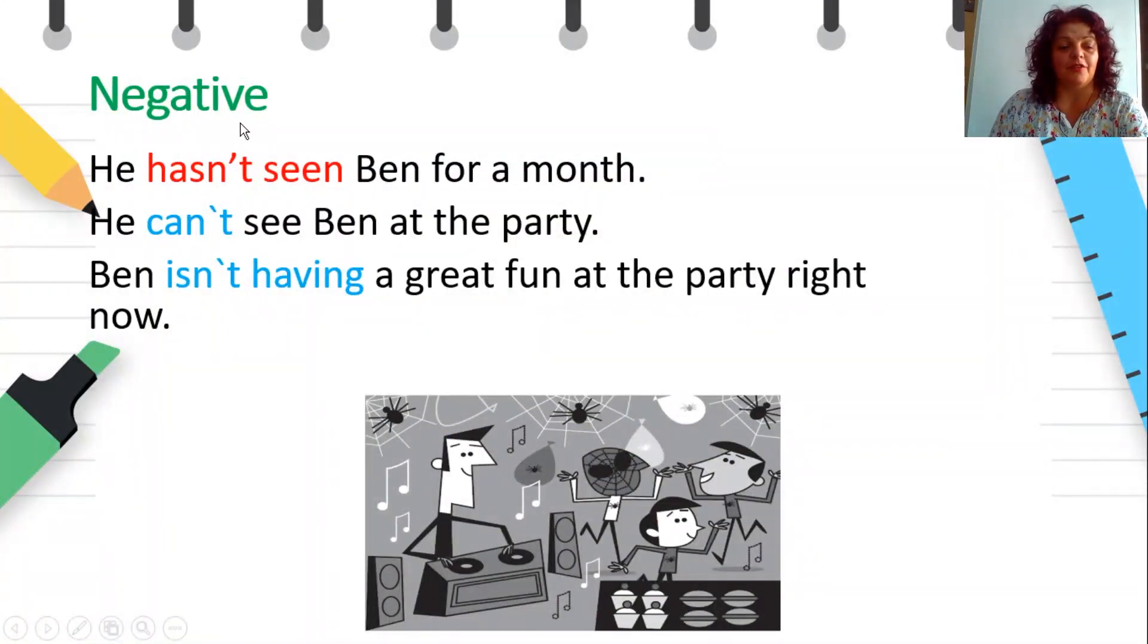Let's see the negative form. He hasn't seen Ben for a month. Look at the construction, which means it's a long time. He hasn't seen Ben. He can't see Ben at the party. But it's a fact, because Ben isn't there. And Ben isn't having great fun at the party right now, because obviously it's boring.